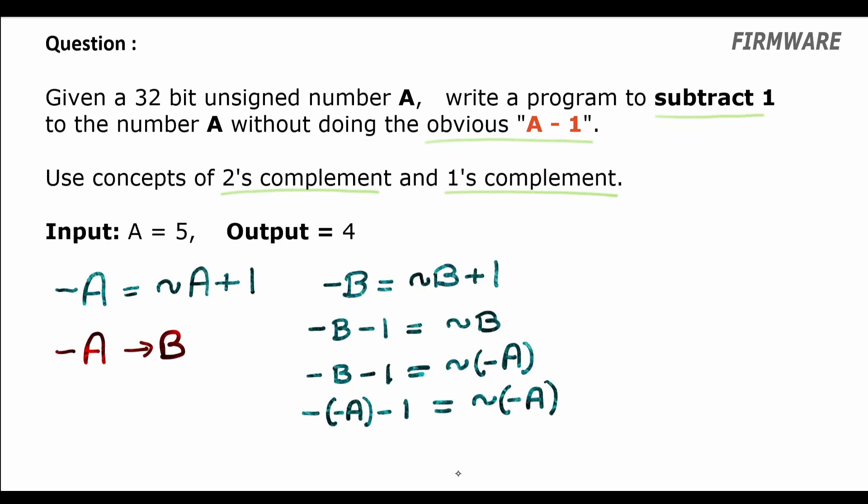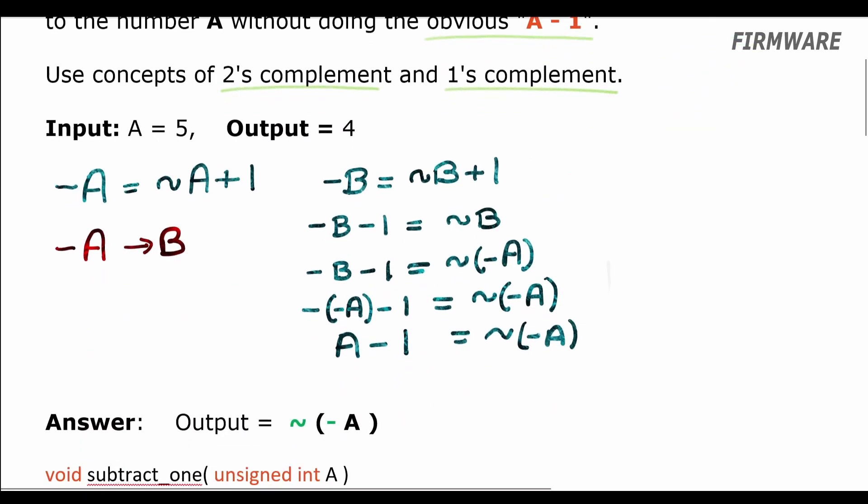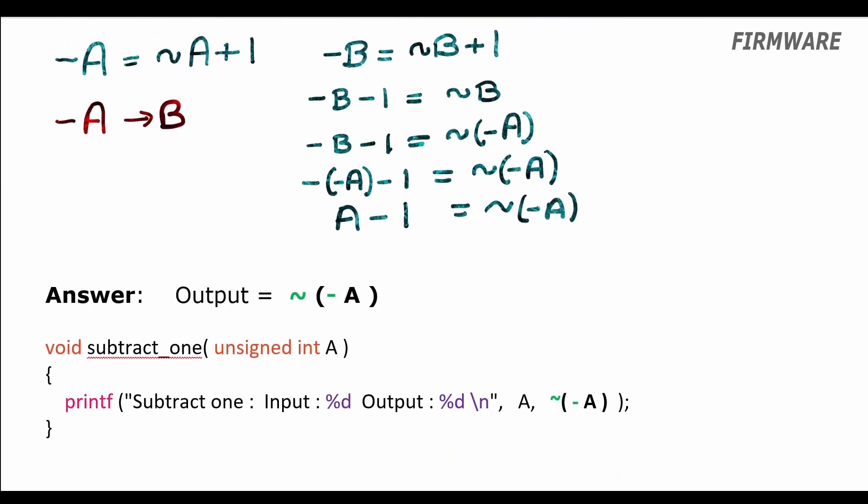Now minus into minus is nullified to plus. So we have a minus 1 equal to inversion of minus a. Did you get it? So if we do inversion of minus a, it is equivalent to subtracting 1 from a. This solves our problem.